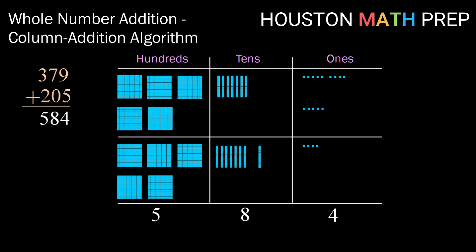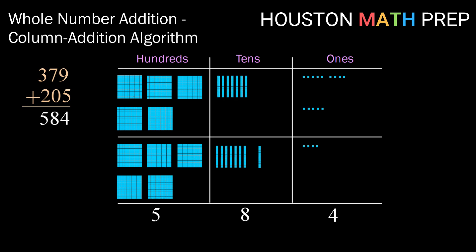Okay, so there's column addition with tens blocks. Now let's check it out just using numbers but carrying through the same idea. So here instead of putting base 10 blocks in our columns we're just gonna take the digits from each one. So in our hundreds column we've got 6 plus 3. In our tens column we've got 3 plus 8. And in our ones column we've got 5 plus 9.